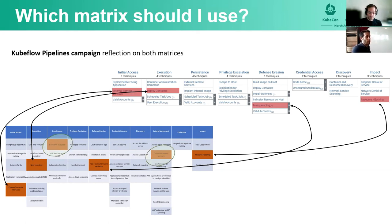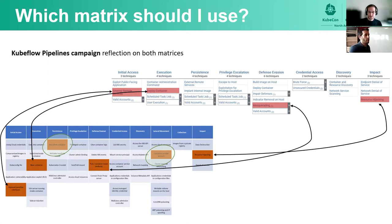The discrepancy comes from the backdoor container technique and the container service account. Attackers can run malicious code inside a container within a cluster, and by using Kubernetes controllers such as DaemonSet or Deployments, the attackers can ensure a constant number of containers will be executed. We chose to represent this technique under both execution and persistence tactics — persistence because Kubernetes controllers safeguard that the attacker's payload remains running. MITRE chose to have this technique only under execution. Another discrepancy was the container service account: according to MITRE, lateral movement hasn't been observed in real-world attacks for containers, so they decided not to include it.